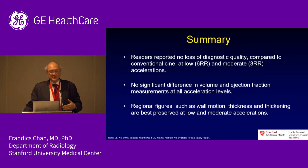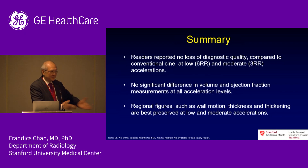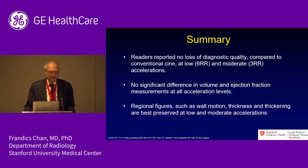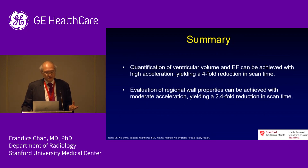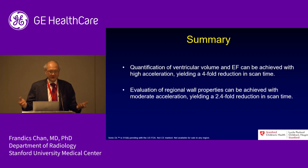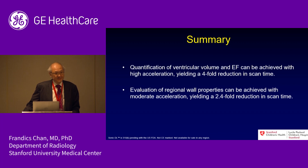In summary: there is no loss of diagnostic quality compared to conventional CINE at 6RR or moderate 3RR accelerations. There is no significant difference in volume and ejection fraction measurements across all acceleration levels down to 1RR. Regional figures such as wall motion, thickness, and thickening are best preserved at 6 to 3RR accelerations. Volume and ejection fraction at the highest acceleration yield a 4-fold reduction in scan time, while regional wall motion evaluation at 3RR still gives a 2.4-fold reduction — something that took 10 minutes before can now be done in about two minutes.